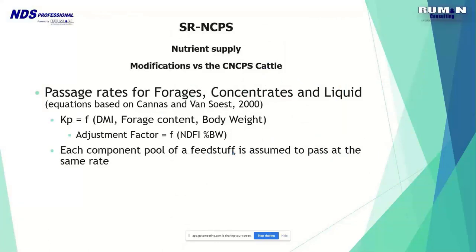A few key differences between large and small ruminants: passage rates differ significantly — smaller ruminants have a much faster rate of passage, sometimes four to five times that of bovines. The KP is a function of intake for its content body weight, with an adjustment for NDF intake as a percentage of body weight. Each fraction of a feedstuff is assumed to pass at the same rate.